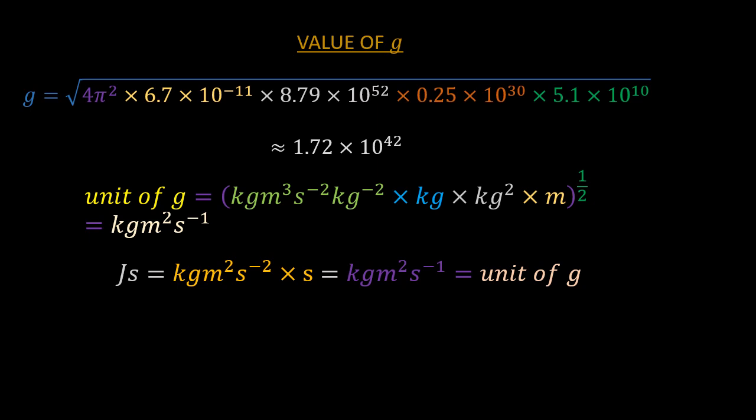Therefore, the unit of G is the same as that of H, and is joules second. So, we can write the value of G as 1.72 exponential 42 joules second. This is the value of our universal Planck's constant.